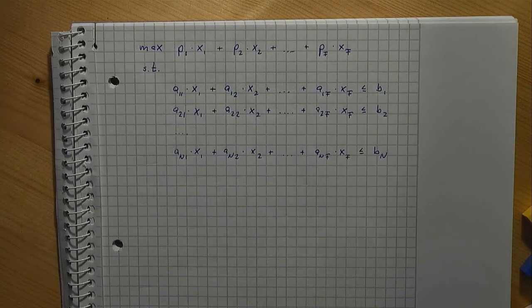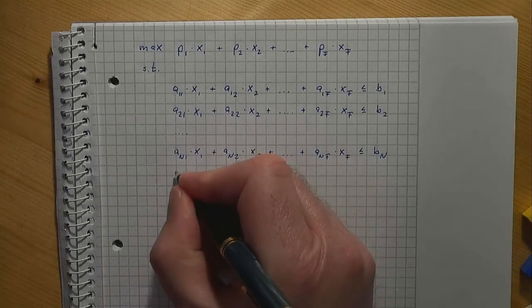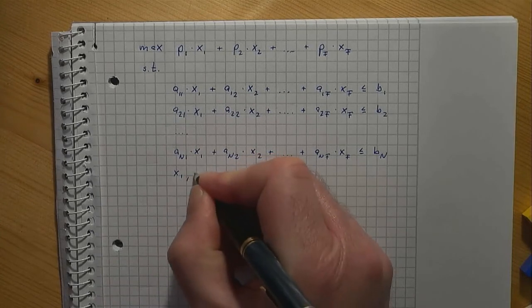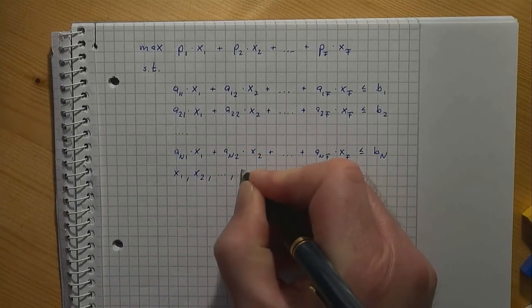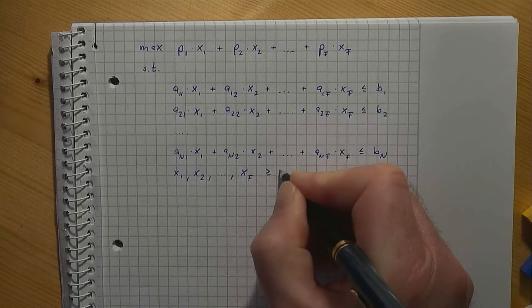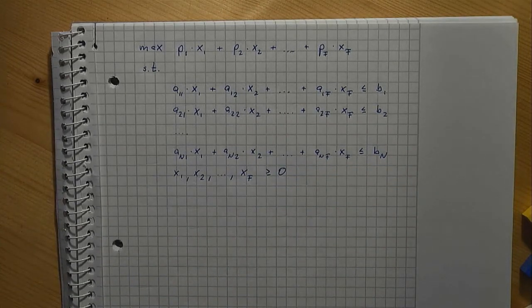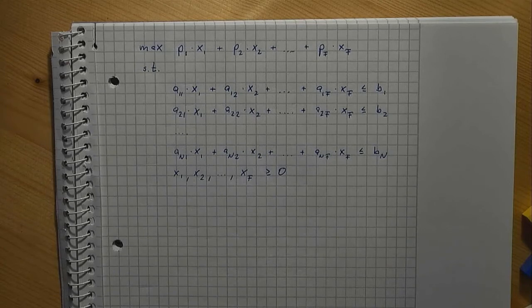It should be emphasized that some of these a values might be zero to indicate that not every part is required for every furniture. Finally, the domains. Note that, like with decision variables, we have used the same name for parameters that have the same function. p1, p2 and so on are prices, b1, b2 and so on are part availabilities and the a's are production coefficients.